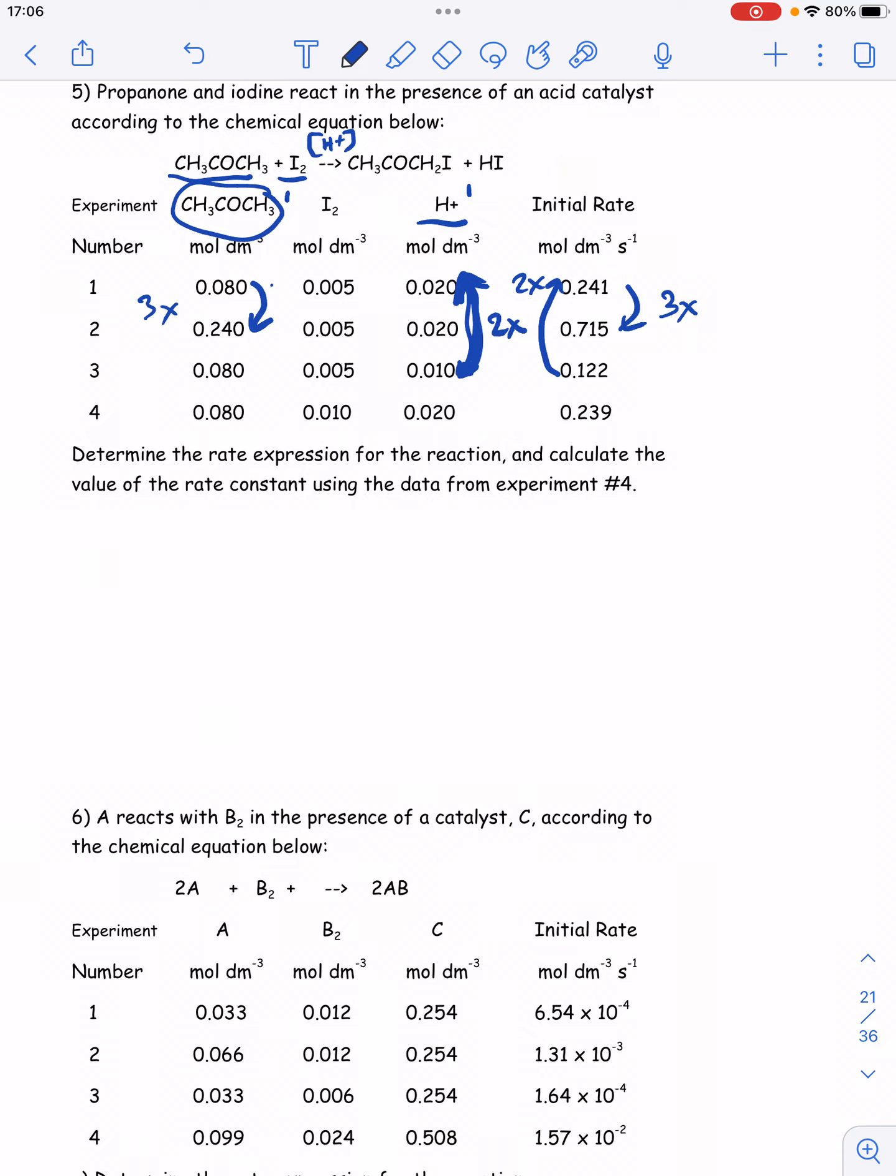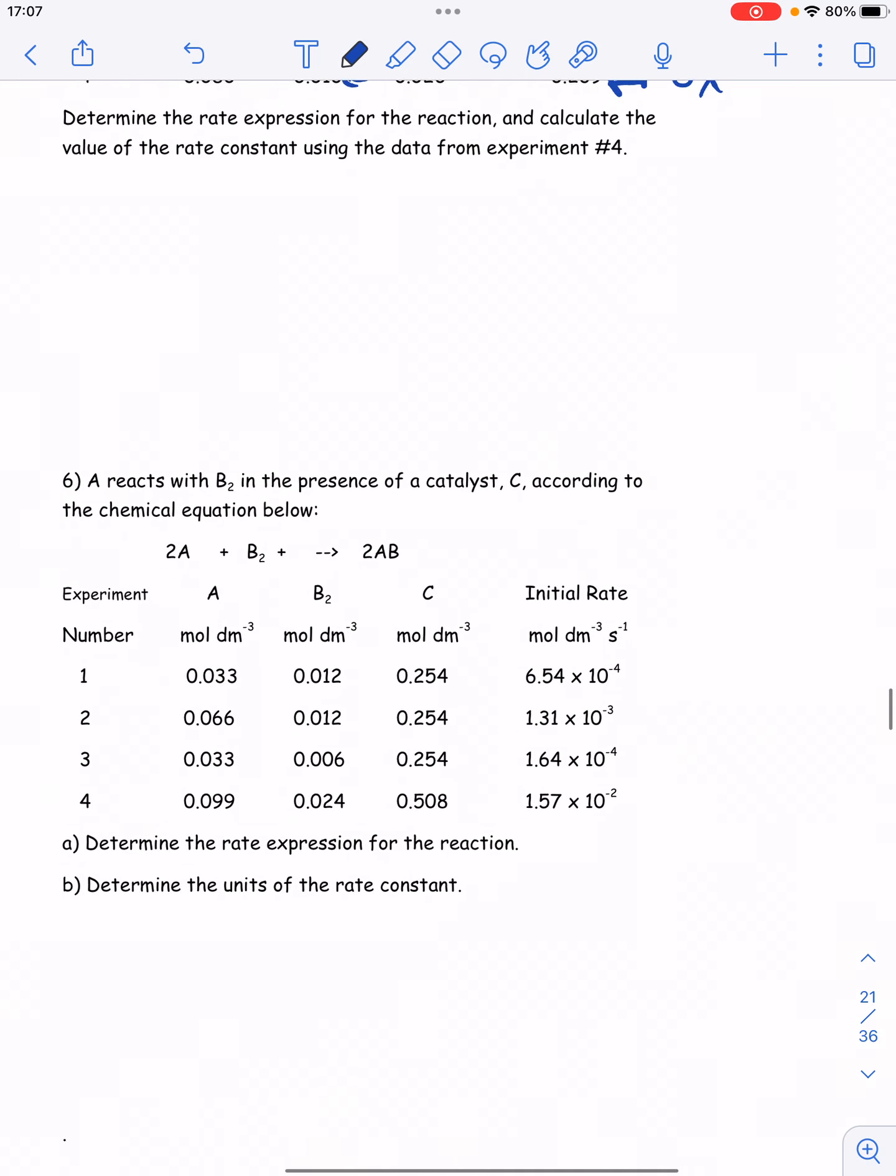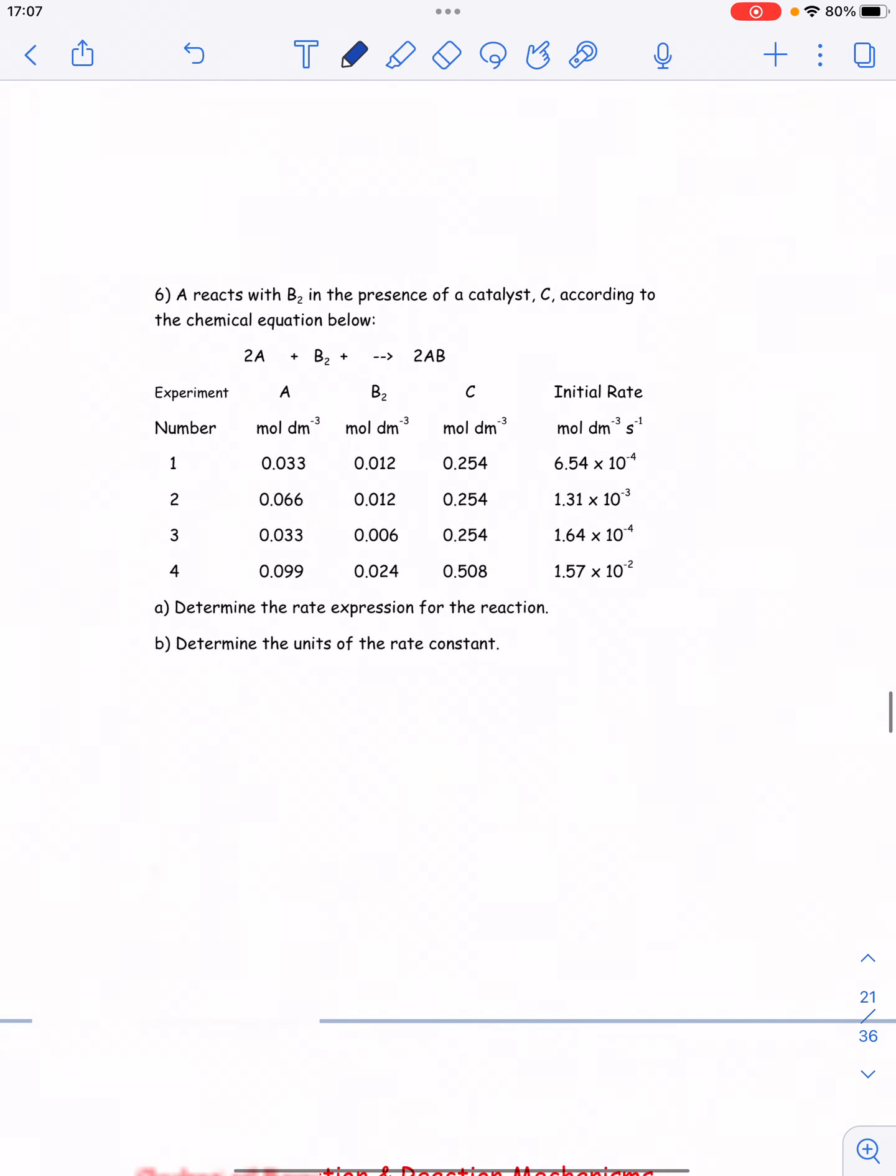And then if I compare, let's see, I have to do trial 1 to trial 4. If I compare trial 1 to trial 4, I can see that the I2 is doubling, but the rate is more or less not changing. So iodine here would be a zero order. So I got first order, first order, and zero order for iodine. Okay. And then the last one here.